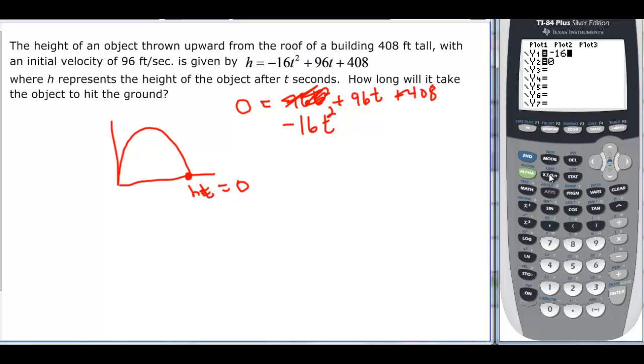So negative 16x squared plus 96x plus 408. I have my y2 equals 0, I can now graph, but I need to change my window because I have a standard window and this constant, that's the y intercept, is at 408. So I need to change that and I've already done this.